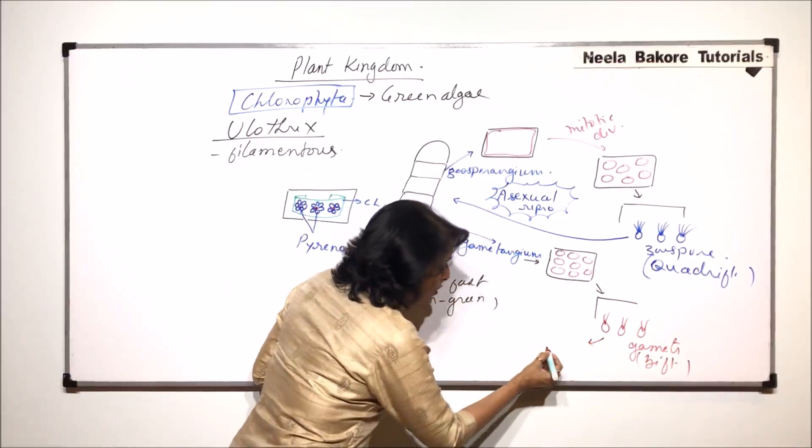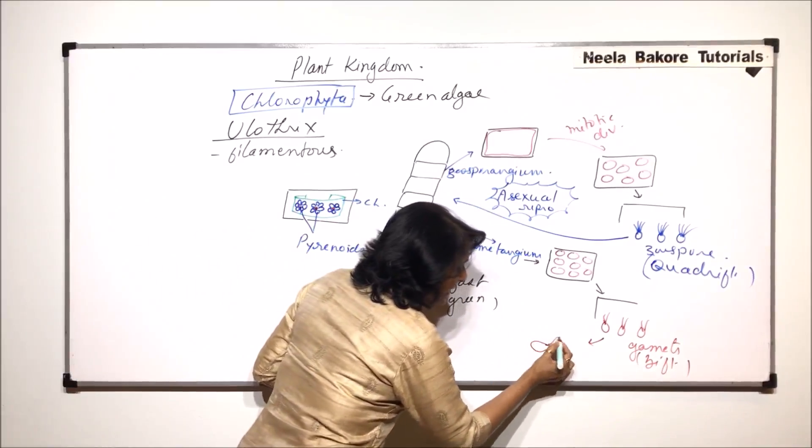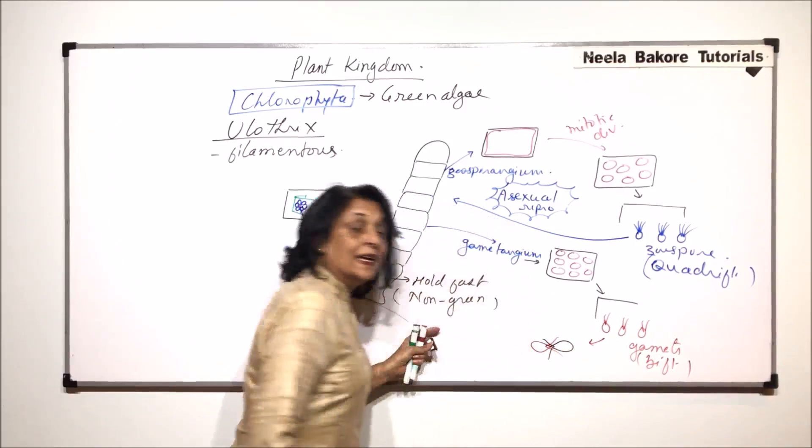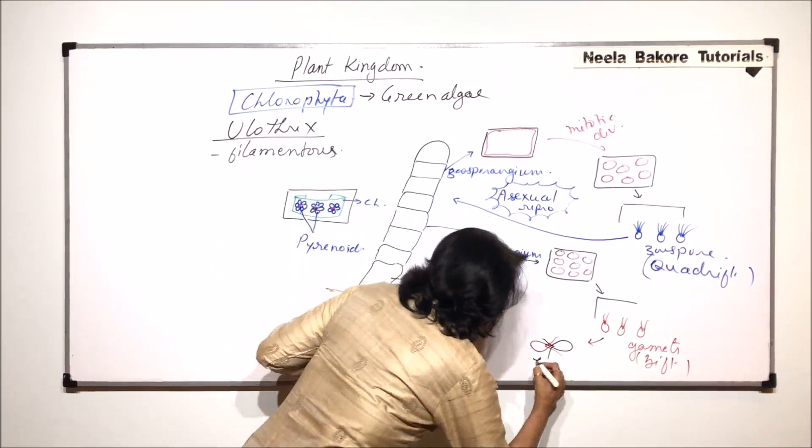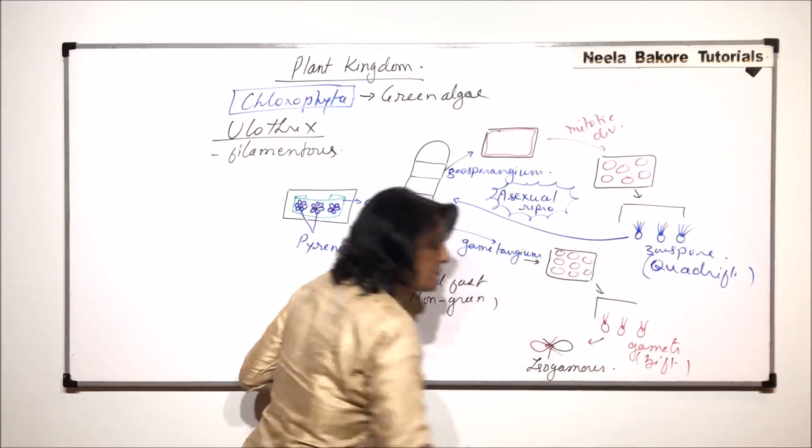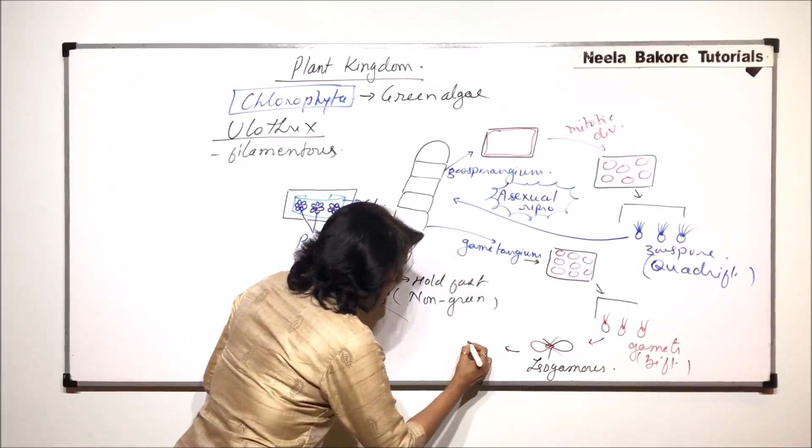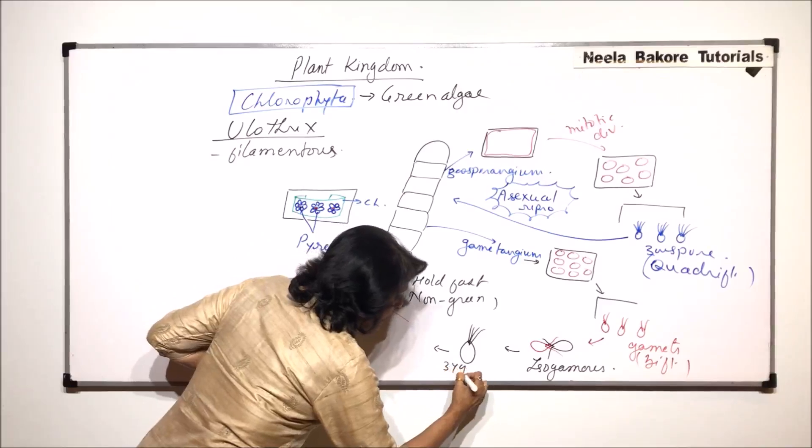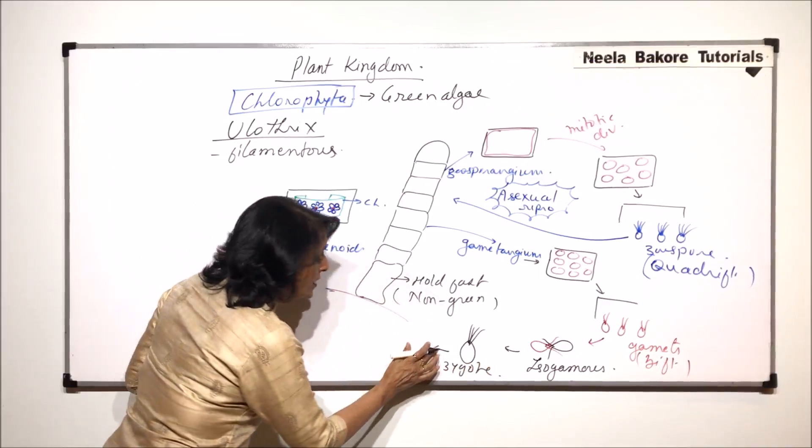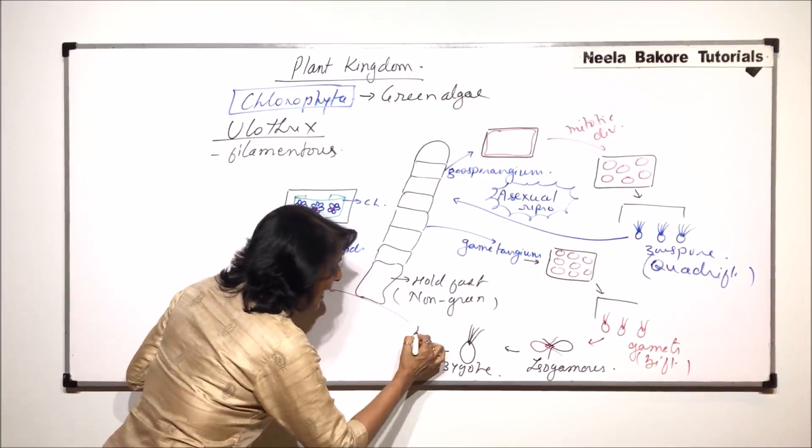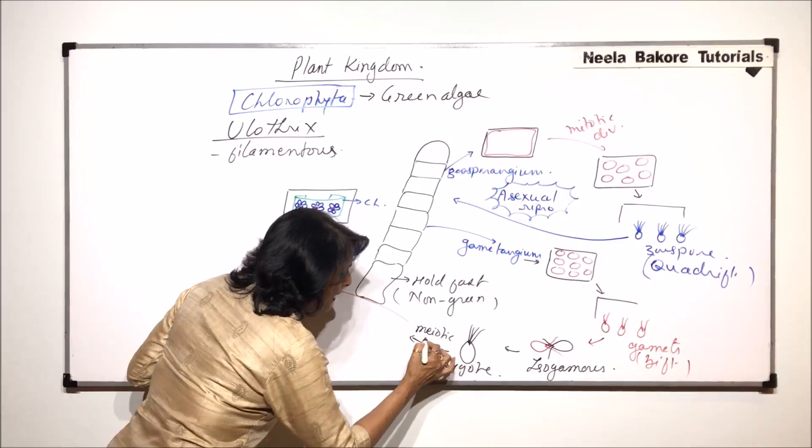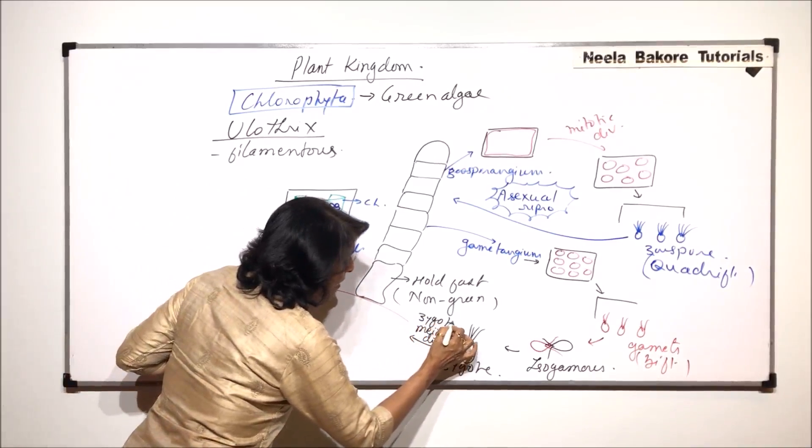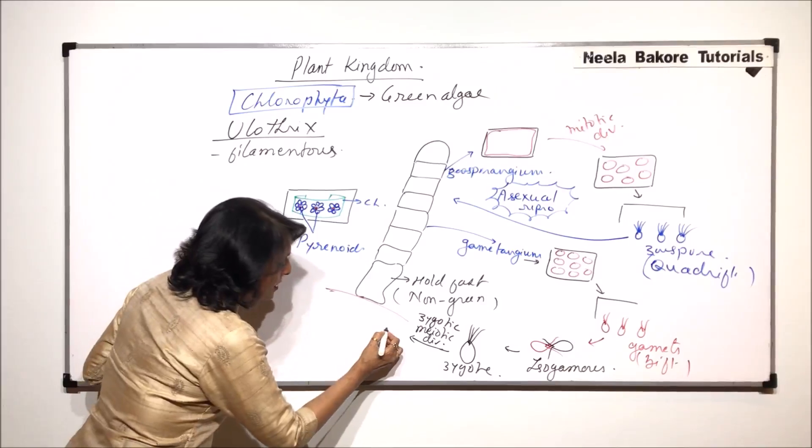So these are the gametes and they have only two flagella. Two gametes are going to fuse. They fuse through their anterior end. So this is one gamete, the other gamete is this one. The two gametes are exactly identical. So this is isogamous type of fusion and a zygote is formed. Temporarily the zygote is quadriflagellate. And then it loses its flagella and undergoes meiotic division. And because it is the zygote which is dividing by meiosis we call it zygotic meiosis. So it loses its flagella,